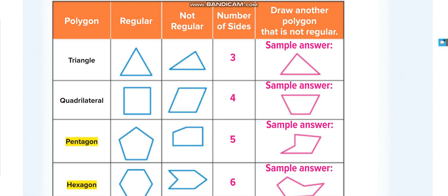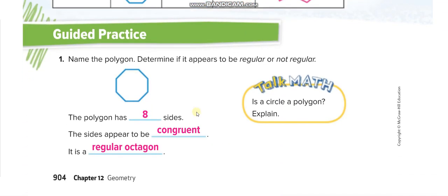Now let us solve the guided practice. Let us count the sides of the first figure: one, two, three, four, five, six, seven, eight — the polygon has eight sides. We can see all the sides are congruent and equal, so we call it regular. A figure with eight sides is an octagon, so we say it is a regular octagon.